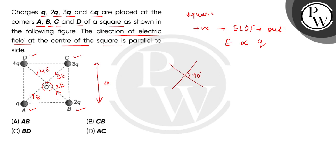So now here, the diagonal AC gives a net electric field along the direction of CA with magnitude 2E. And the diagonal DB gives an electric field along direction DB with magnitude 2E.